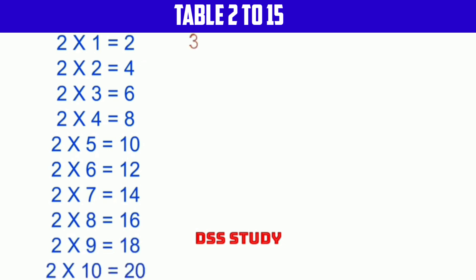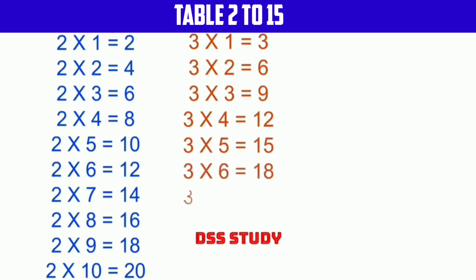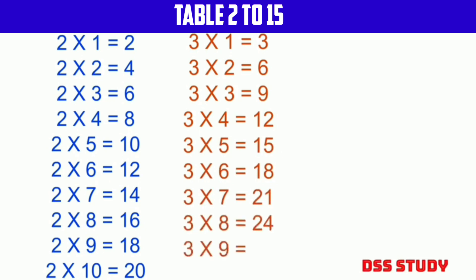3 times 1 is 3, 3 times 2 is 6, 3 times 3 is 9, 3 times 4 is 12, 3 times 5 is 15, 3 times 6 is 18, 3 times 7 is 21, 3 times 8 is 24, 3 times 9 is 27, 3 times 10 is 30.